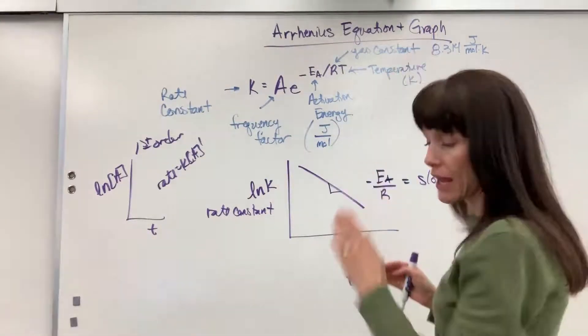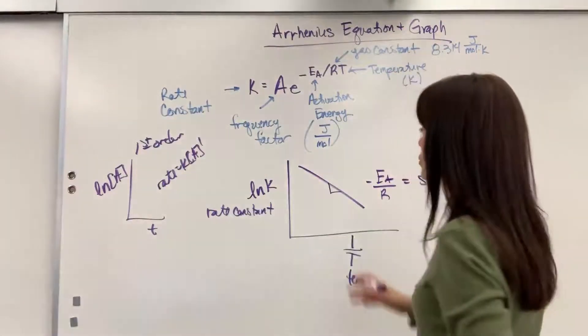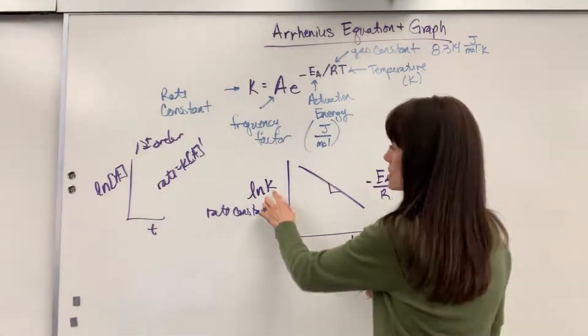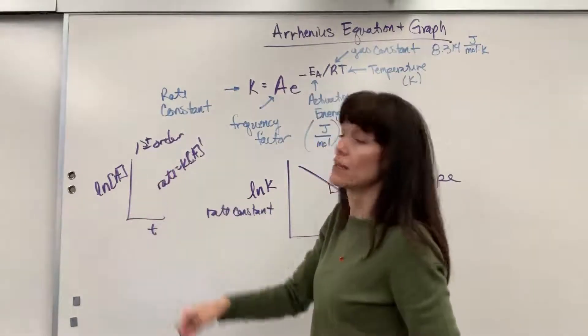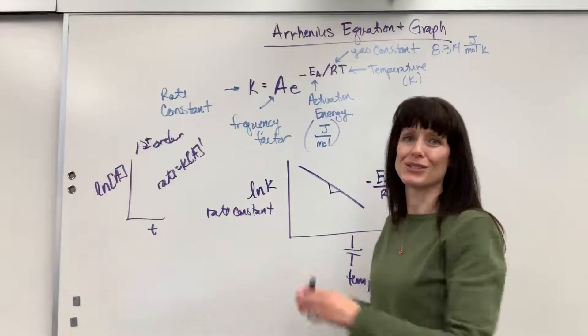So, demarcate. Draw a line in your brain. Two separate file folders. First order reaction, Arrhenius equation. Here's your graph for the Arrhenius. K related to activation energy. Here's the graph when you're doing a first order rate law. Don't confuse those two. Number one mistake that students will make.